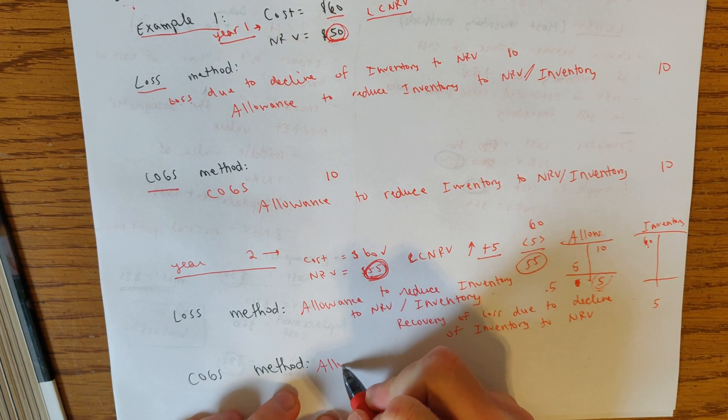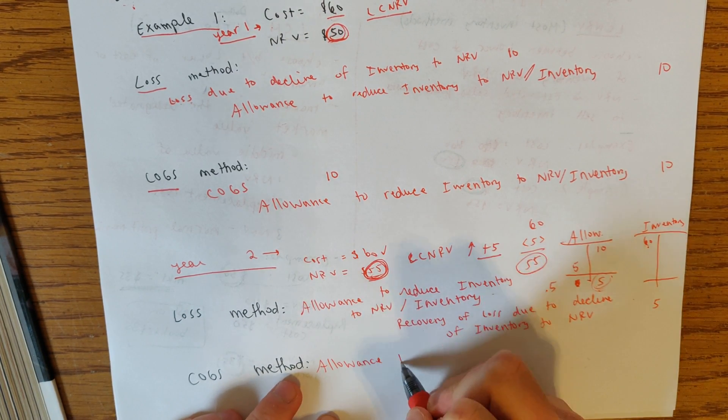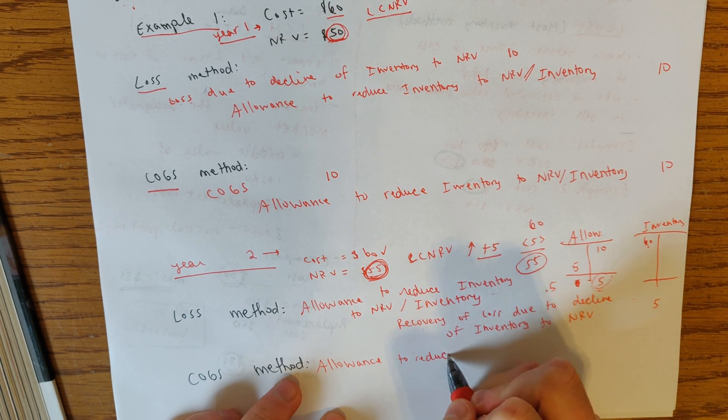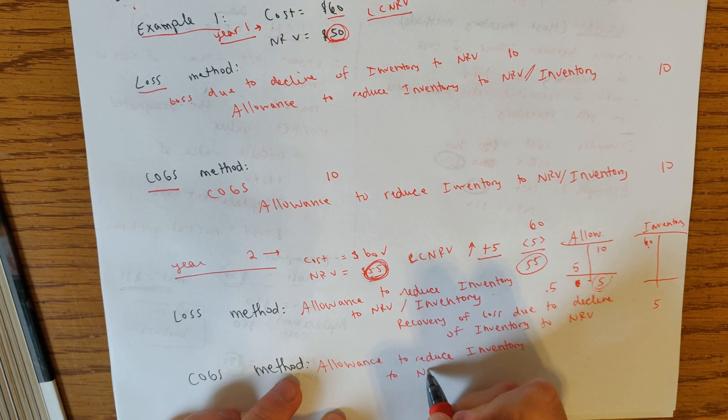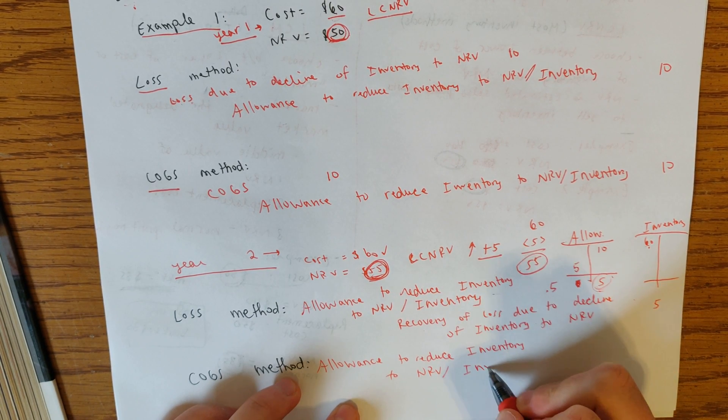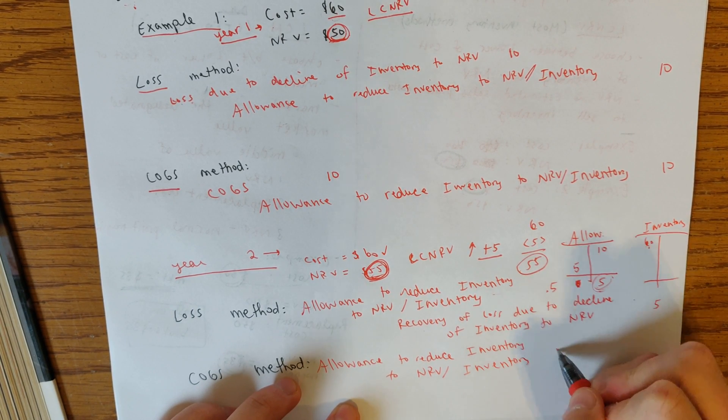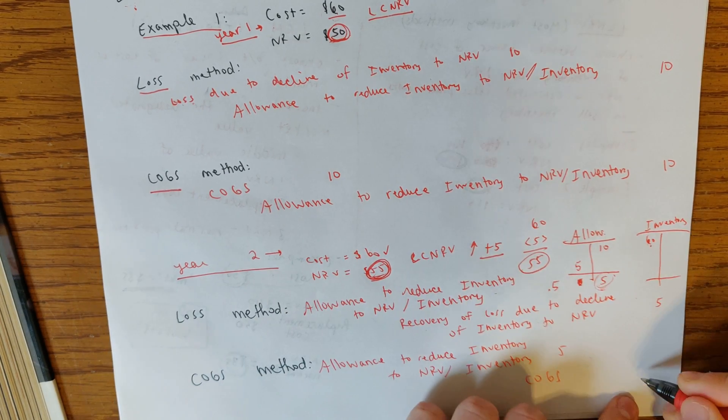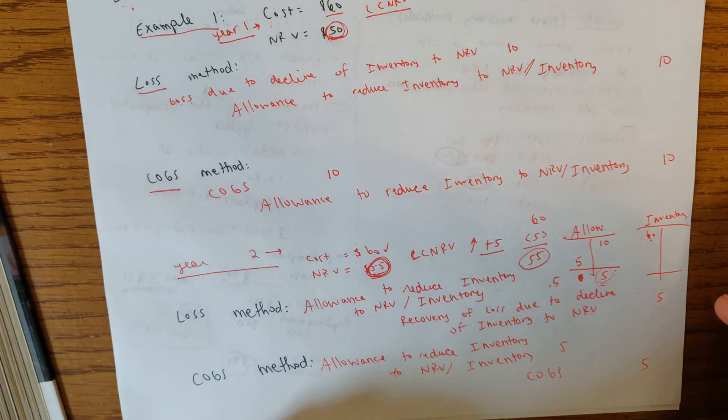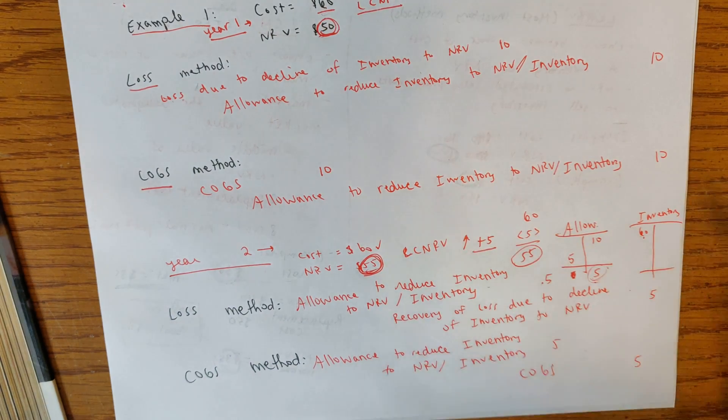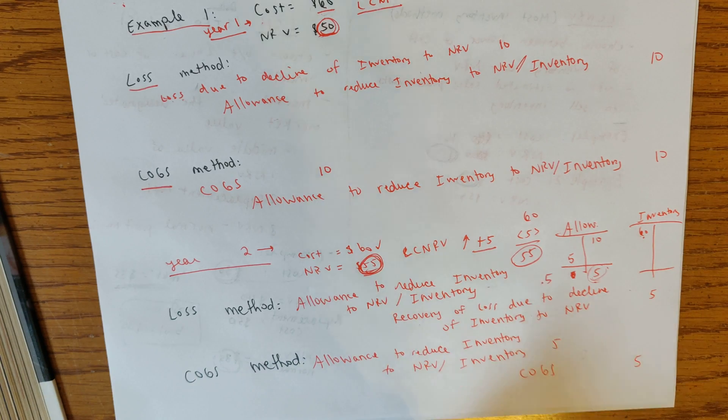Finally, the cost of goods sold method. Just finishing up here, we have the exact same debit allowance to reduce inventory to NRV or inventory for five. And then the credit is simply cost of goods sold. This is the easiest one because it just always goes to cost of goods sold, whether you're increasing or decreasing cost of goods sold. And again, the same rules apply for writing up the inventory and everything we've gone over.